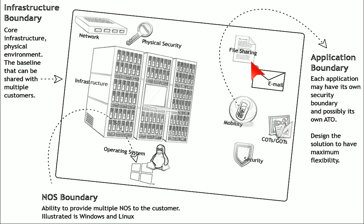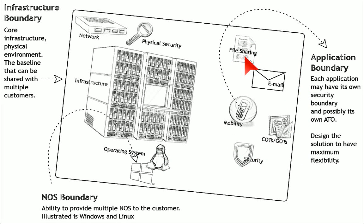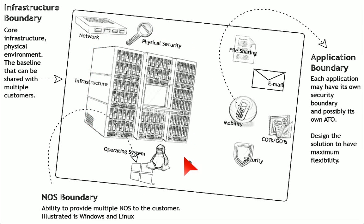These could all be individual application boundaries, each with their own ATO. So we could have an ATO for the infrastructure that gets us 85% of the way. We load on a Linux operating system that gets us another 5%, and then we have a remaining 10% — say, email or mobility. When granting the ATO, they take into consideration the 90% work already done and then account for the additional 10% required for email, file sharing, or mobility.